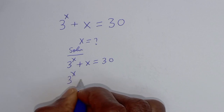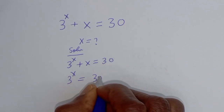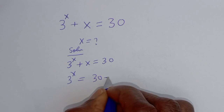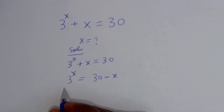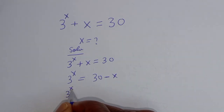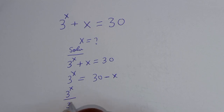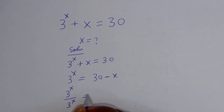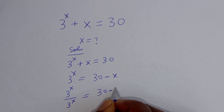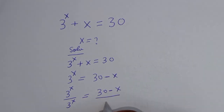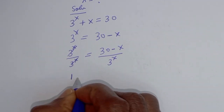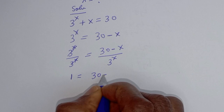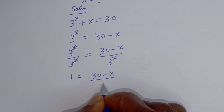Then 3 raised to power s is equal to 30 minus s. Now let's divide both sides of this equation by 3 raised to power s. This gives 3 raised to power s divided by 3 raised to power s is equal to 30 minus s divided by 3 raised to power s. This cancels to give 1 is equal to 30 minus s divided by 3 raised to power s.